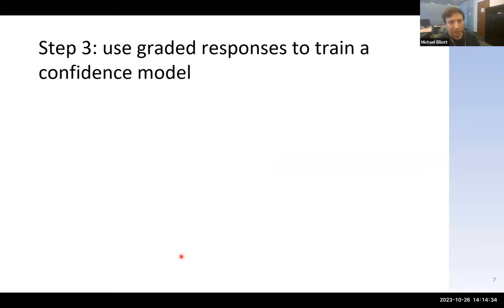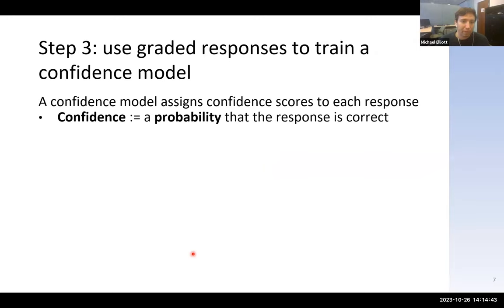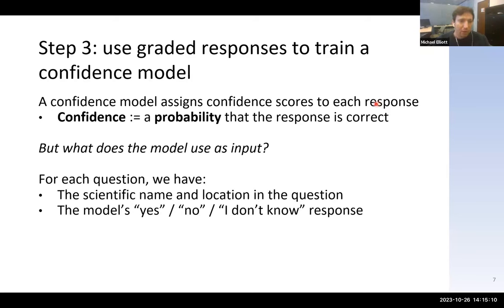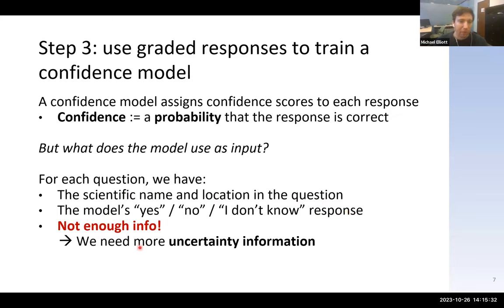The third step: after creating a test set and collecting ChatGPT responses, we want to train a model to predict when ChatGPT is wrong — we call this a confidence model. For each question-and-response pair, we give it a confidence grade representing the probability that the response is correct. Right now we have the scientific name and location in the question, plus the model's yes/no/I-don't-know response, but this really isn't enough for a meaningful probability. We need more uncertainty information — things that can indicate the possibility of error or correctness.